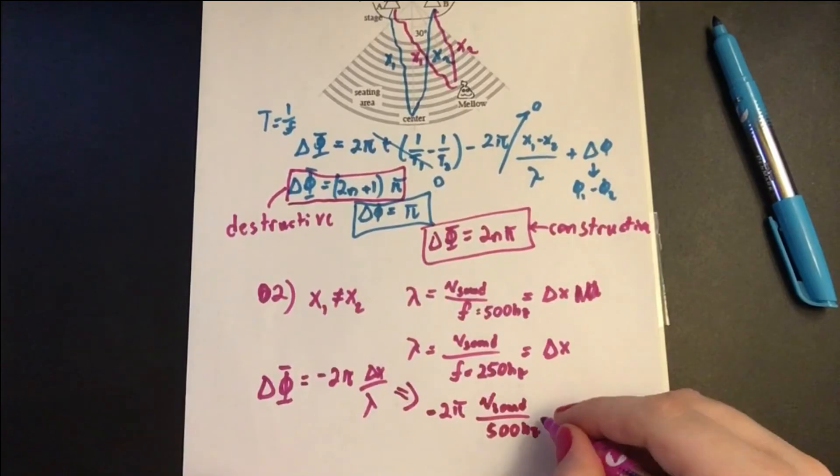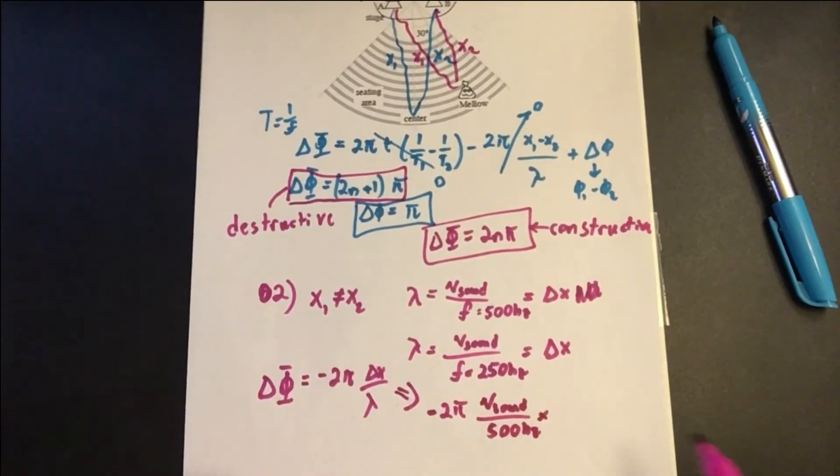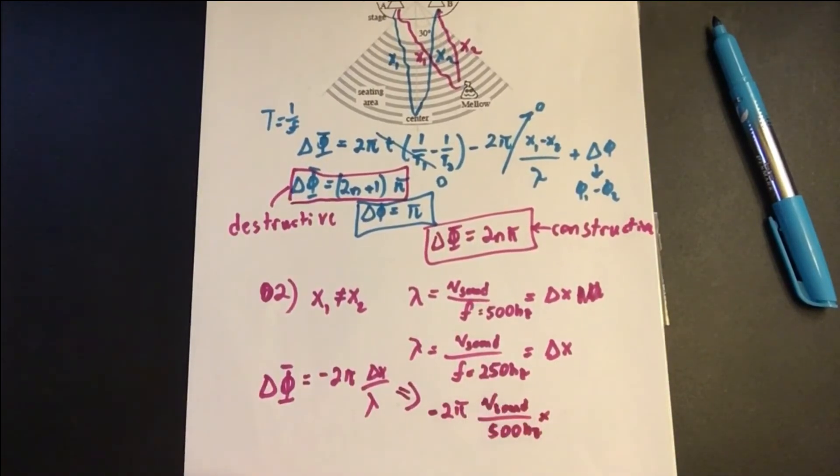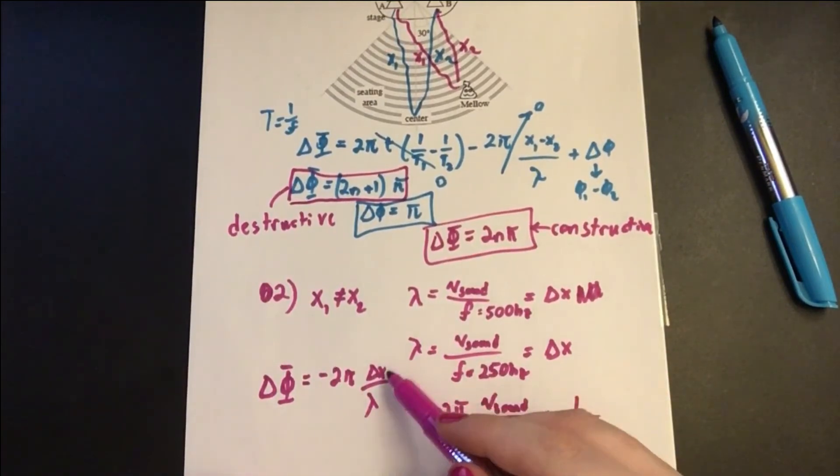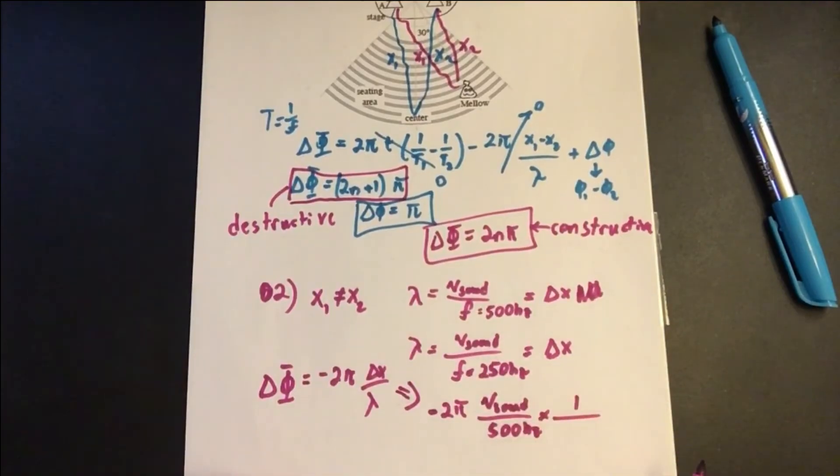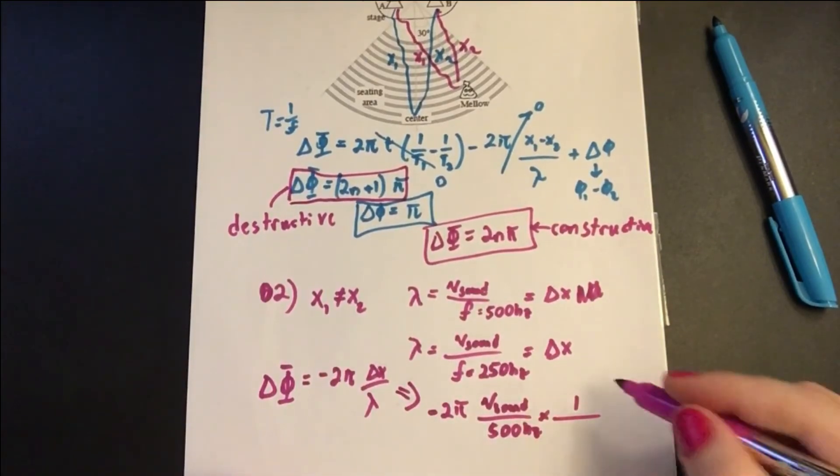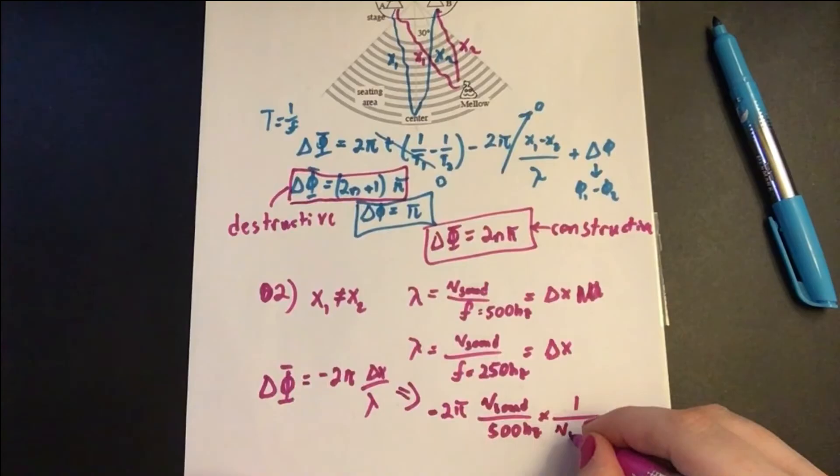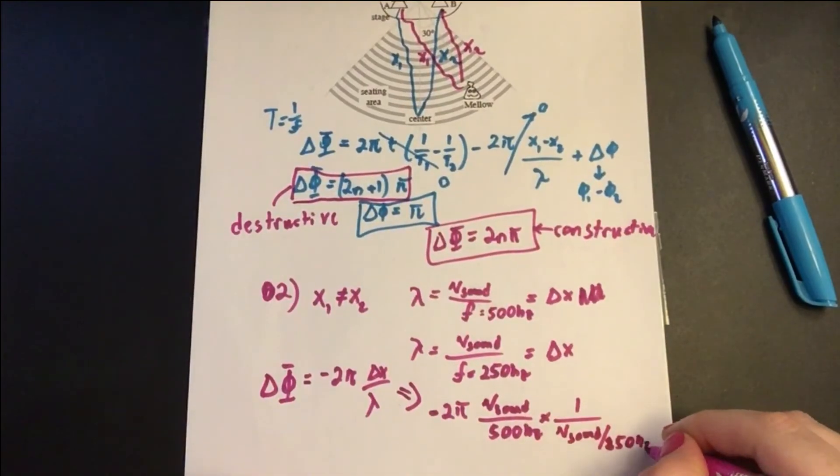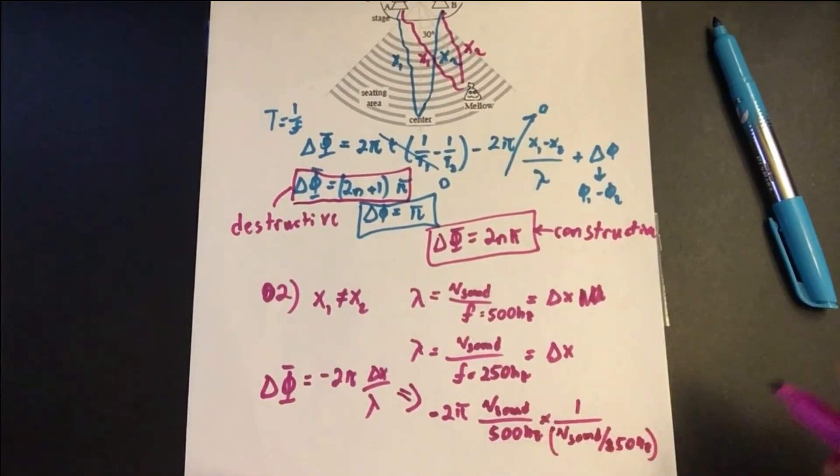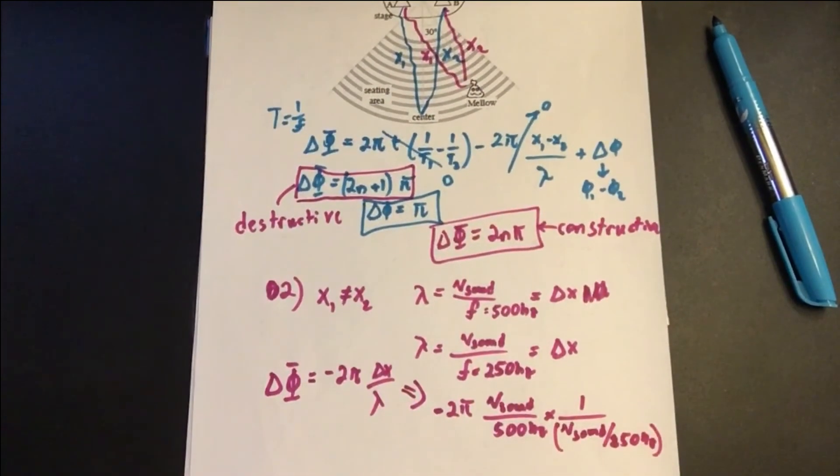Vs, V of the sound, over 500 hertz, times, now we're going to plug in lambda. So this is 1 over, Δx we plugged in lambda. So Δx we plugged in for here, lambda we're going to plug in for here, over velocity of sound divided by 250 hertz.